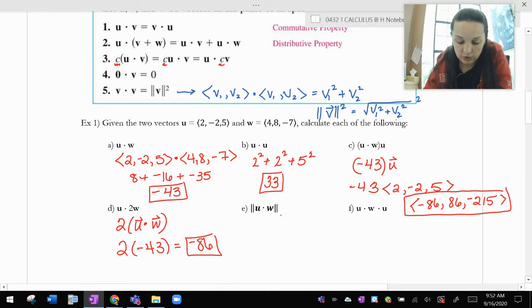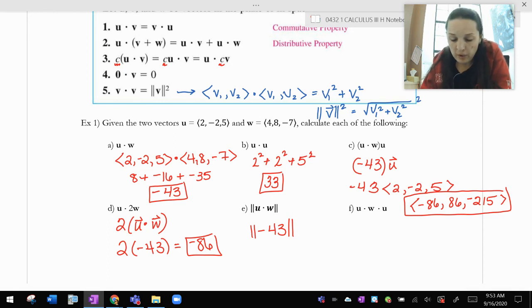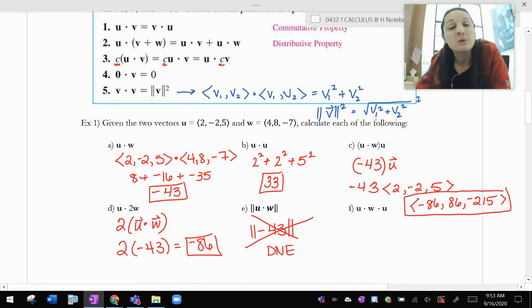The magnitude of u dot w. So that would be the magnitude of negative 43, which there is an argument to be made here that the magnitude of negative 43 is 43. But when we use those double bars, we really mean the magnitude of a vector. And negative 43 isn't a vector. So really, I want you to understand that this basically does not exist. That's just not something you do.